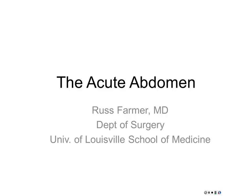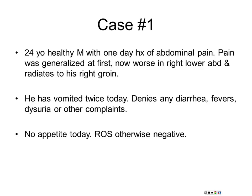Let's go through some cases. Case number one: 24-year-old healthy young man, one-day history of abdominal pain, generalized at first, now moving to the right lower quadrant from the right hip to his groin, vomited twice, and no appetite. What is this? Appendicitis. The reason we're going through these things is to give you the pearls for diagnosing this versus other things.